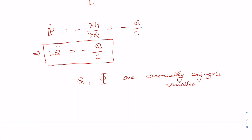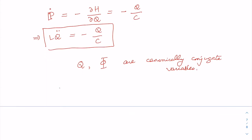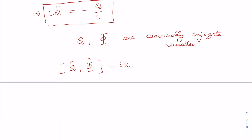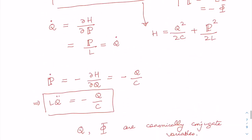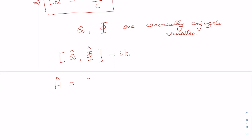We can now invoke quantization. We simply replace Q by the operator Q-hat and phi by the operator phi-hat, with the commutation relation [Q-hat, phi-hat] equals i times h-bar. The Hamiltonian becomes: H-hat equals Q-hat²/(2C) plus phi-hat²/(2L). This is how we can quantize the LC oscillator.